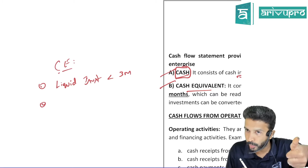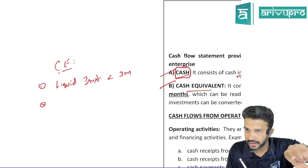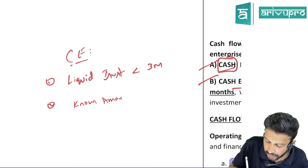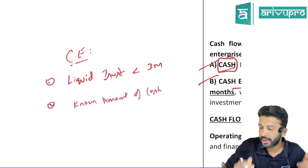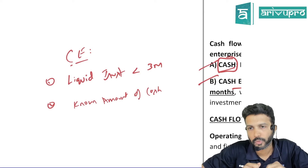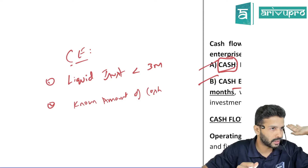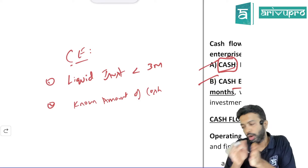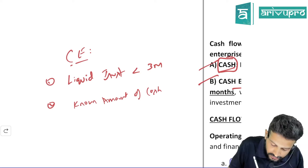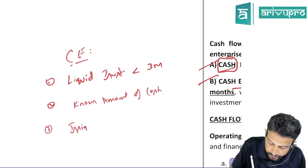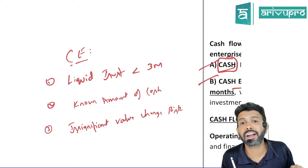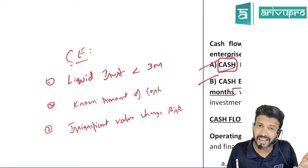The second characteristic: it should be readily convertible into known amounts of cash — meaning when you sell this investment, you should be able to approximate how much cash you're going to receive. Third, it should have insignificant value change risk — meaning its value should not fluctuate too much.